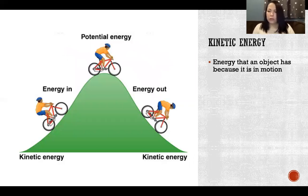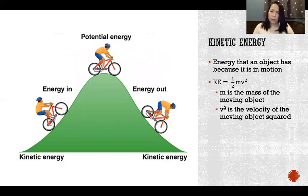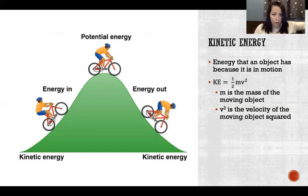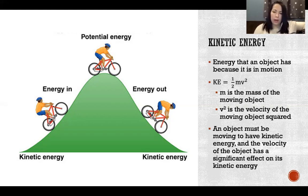Kinetic energy is energy that an object has because it is in motion, calculated as one-half times the mass times velocity squared. Kinetic energy is very sensitive to changes in velocity because velocity is squared — small changes in velocity have a large effect on total kinetic energy. That is all for this lecture; see you for the next one.